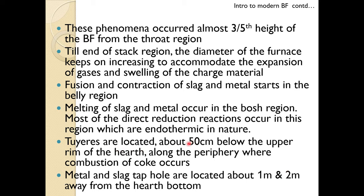Tuyeres are located about 50 cm below the upper rim of the hearth. Along the periphery where combustion of coke occurs, metal and slag tap holes are located about one to two meters away from the hearth bottom.